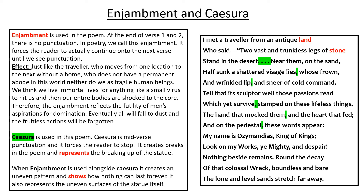In poetry, enjambment and caesura are like similes and metaphors — whenever you see enjambment, meaning no punctuation at the end of a verse, you'll always find caesura, and vice versa. Take these two things together: it represents the uneven surfaces of the statue itself. That's just one interpretation. You can really go into detail regarding enjambment and caesura, linking back to the main theme and message of the poem, and it becomes quite beautiful when you look at it through a holistic approach.